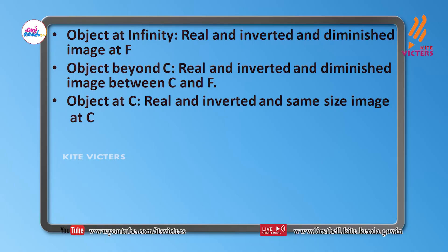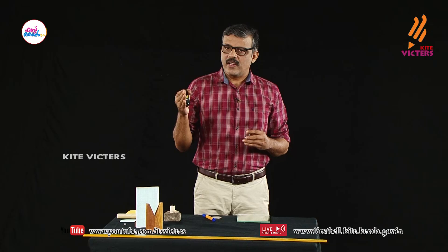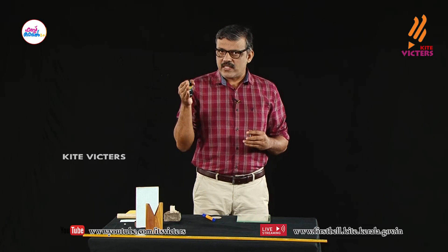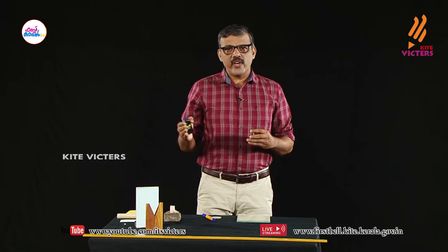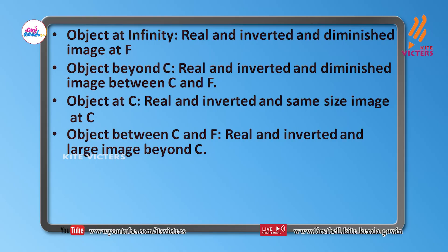In the third case, when the object is at C, we get a real, inverted image of the same size at C itself — the image is also at C. When the object is placed between C and F, we get a real, inverted, and large image beyond C.